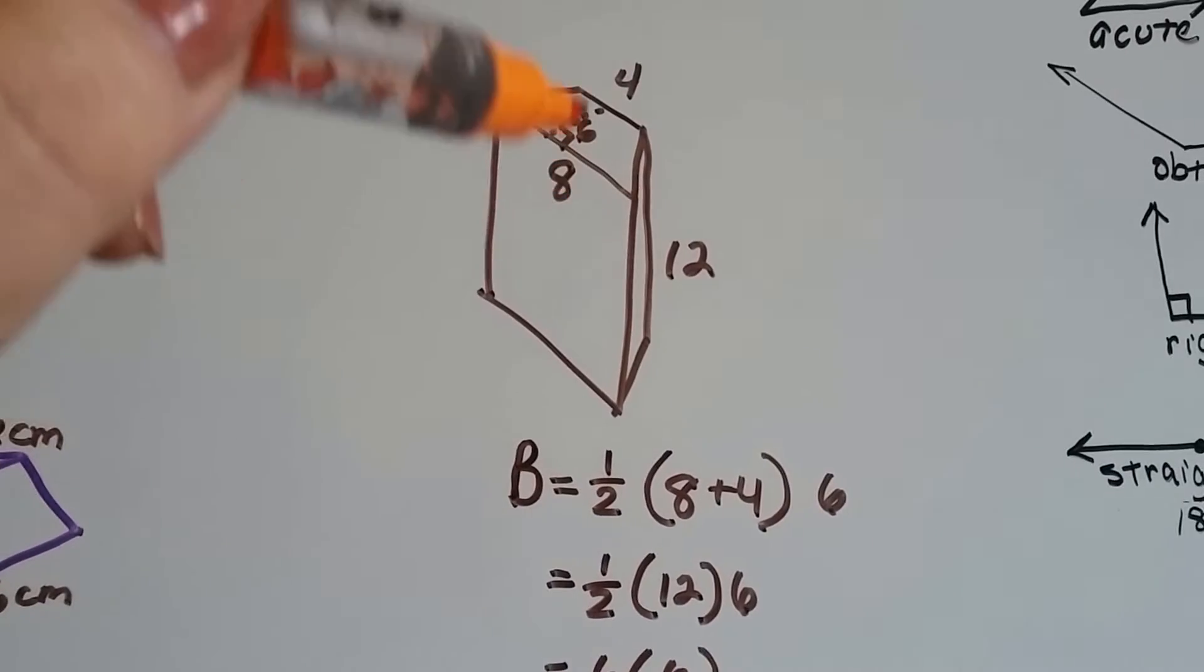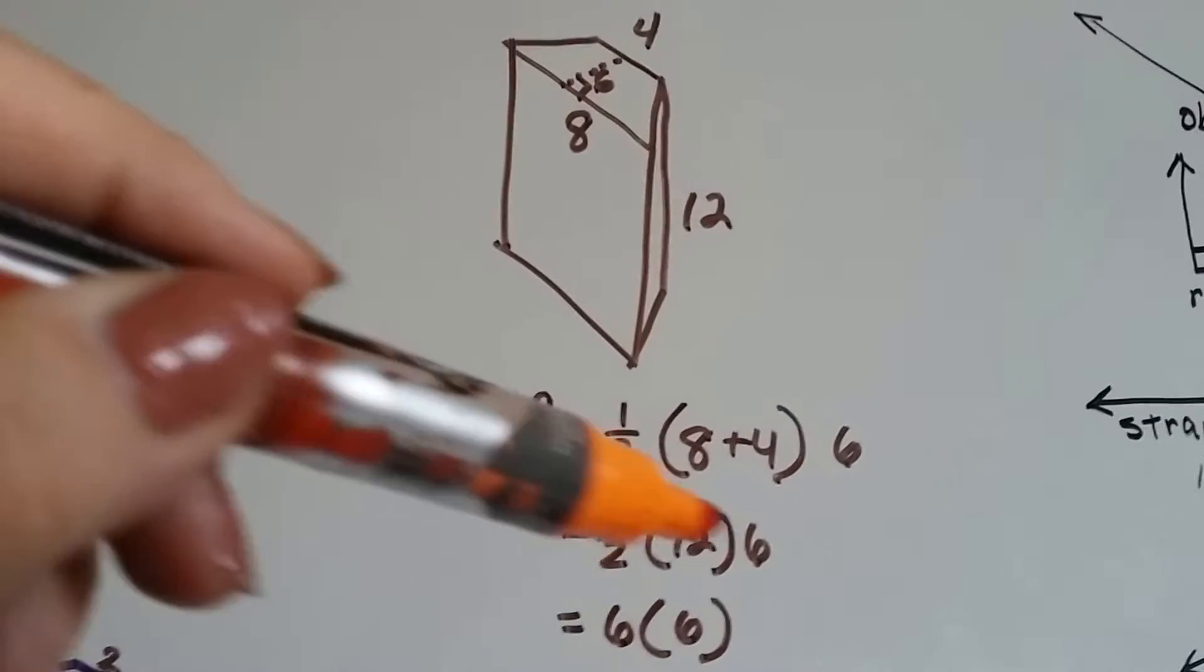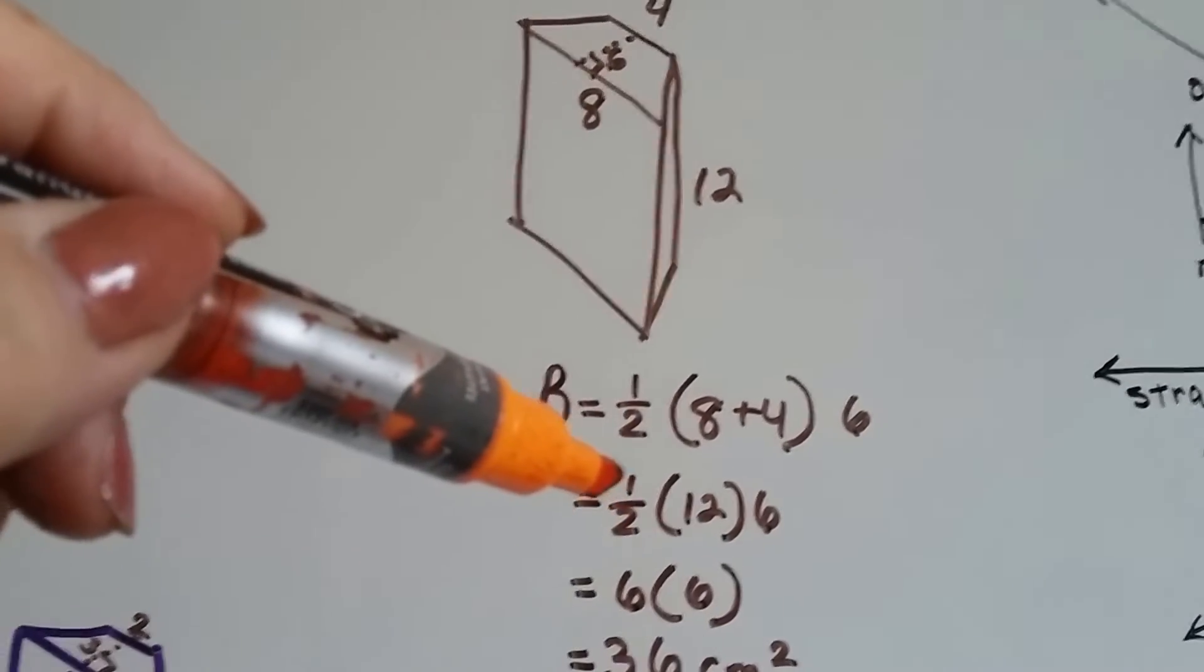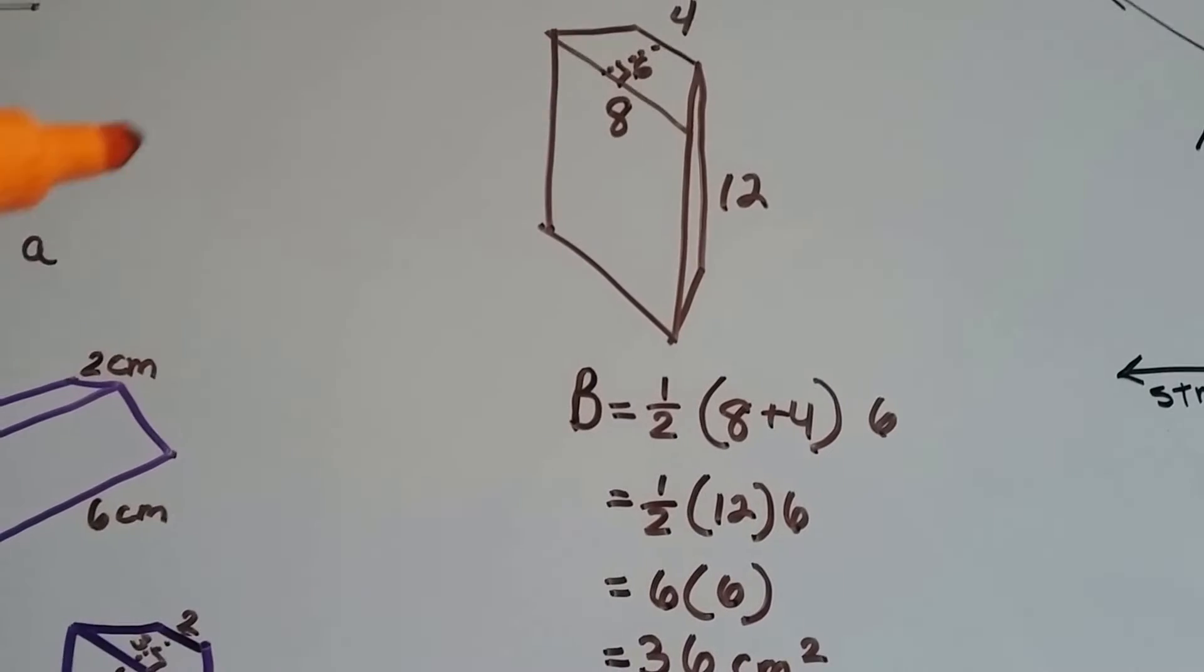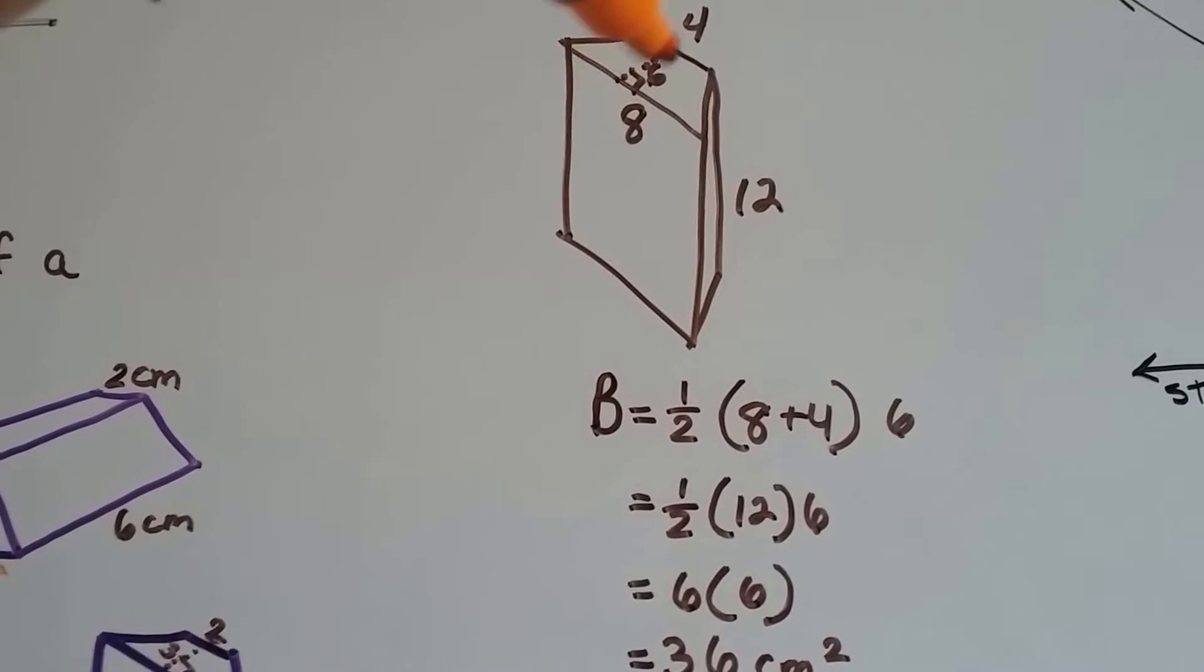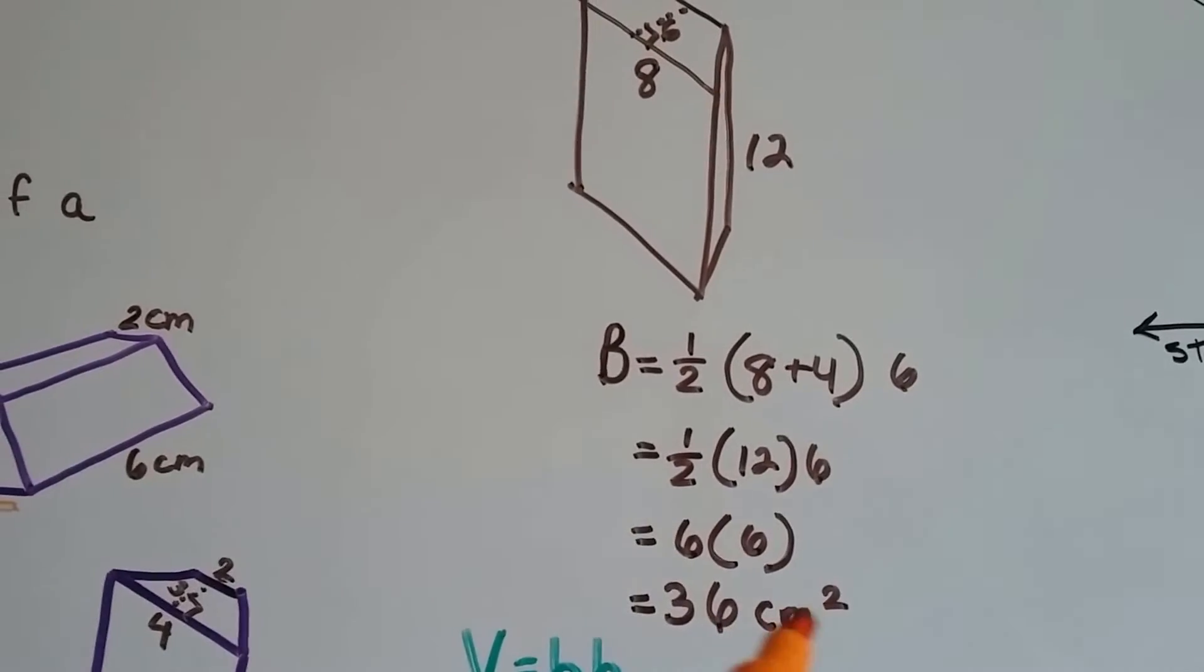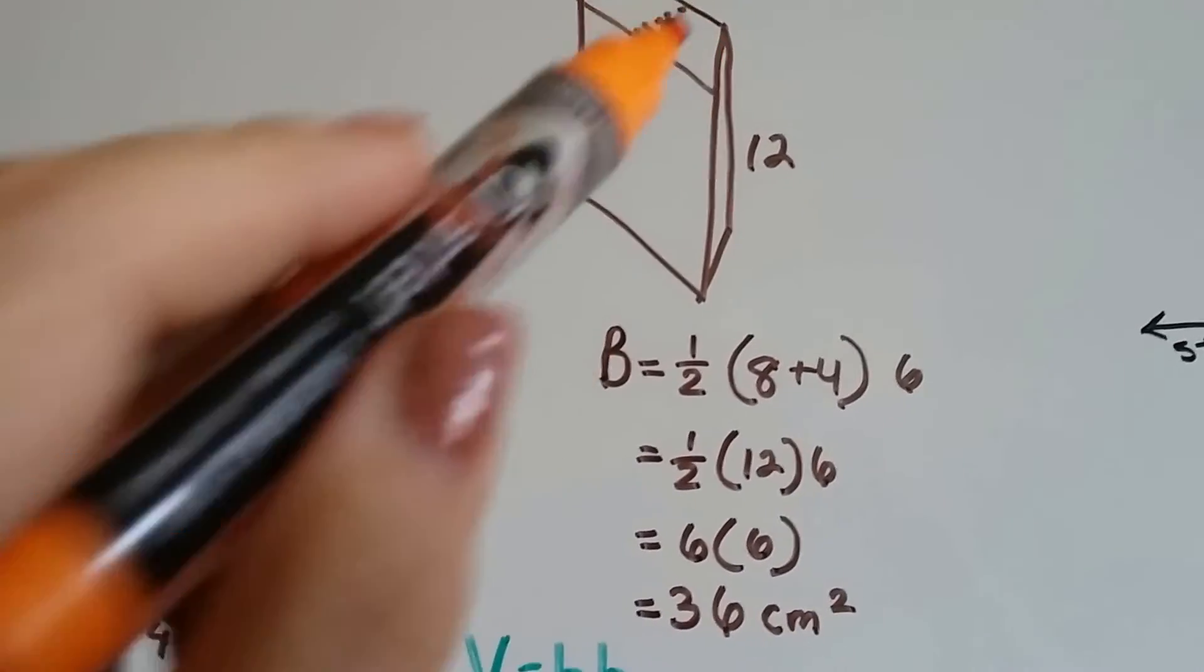So now we add the base 1 and base 2, the 4 and the 8, and we get 12. We need to multiply that by half. Half of 12 is 6. And we need to multiply it by this trapezoid height of 6. So that's 36 centimeters squared for the trapezoid base.